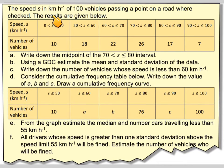The speed S in kilometres per hour of 100 vehicles passing a point on a road were checked. The results were given below. Speed from 0 to 50, 50 to 60, 60 to 70, 70 to 80, 80 to 90, 90 to 100.